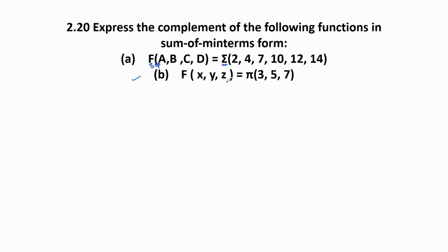The second one is f(x,y,z) = π(3,5,7). Pi means product operator, so the given Boolean function is in POS form - product of sums form. The numbers inside the pi operator (3,5,7) are represented as maxterm numbers.